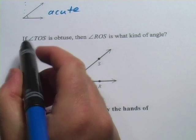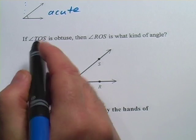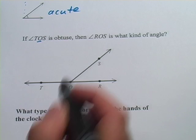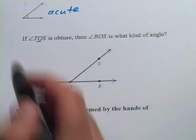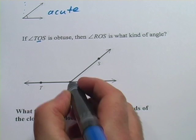Well, the way they write angles, they put that little angle sign in front of it, and then it's the letter in the middle that's important, because that's the one at the point of the angle. So let's find O.